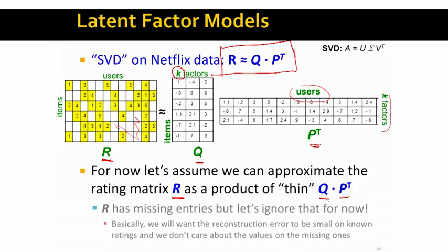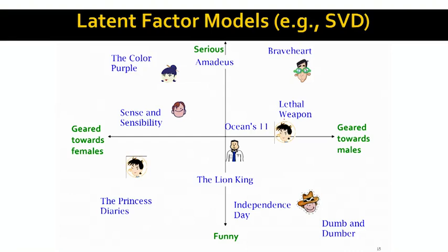What this really does to the data is: every row of matrix Q or every column of matrix P maps each item and each user into this low-dimensional space. We can think of every row of Q or column of P as a three-dimensional representation of a given user or movie. So we took this big utility matrix R and mapped all movies and users into this kind of three-dimensional space. The axes of this latent subspace are called factors.